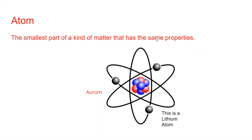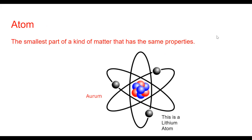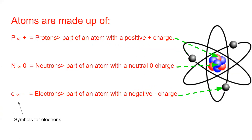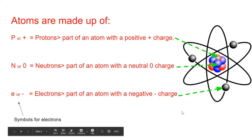Atoms are the smallest parts of an element — the smallest parts of a kind of matter that have the same properties. So if I have gold and I chop it into smaller and smaller parts, eventually the smallest part is going to be an atom with 79 protons. The smallest part of a kind of matter that has the same properties is an atom.